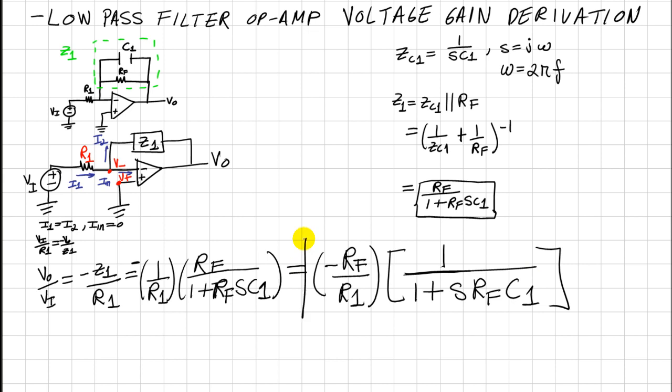And so this would be the gain of your low-pass op-amp filter. So if you get a value for C1, just plug it into here, along with RF and R1.